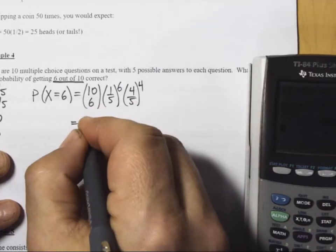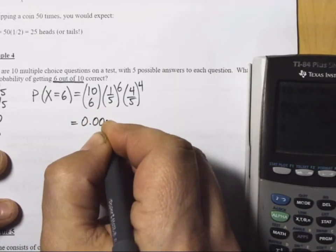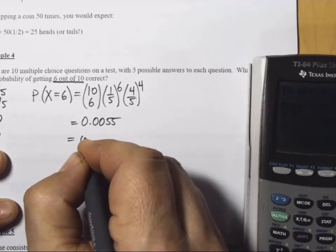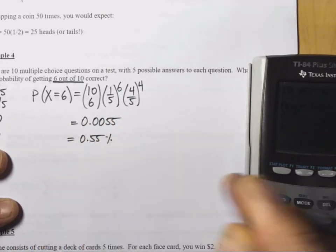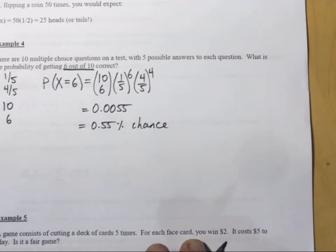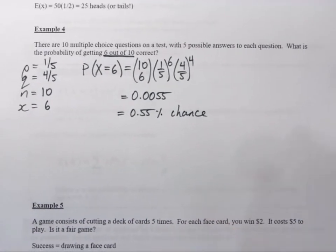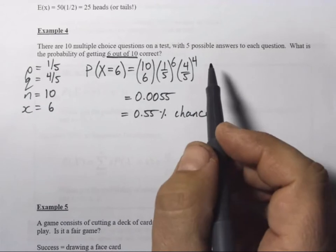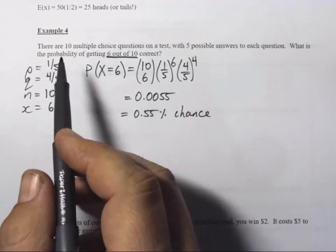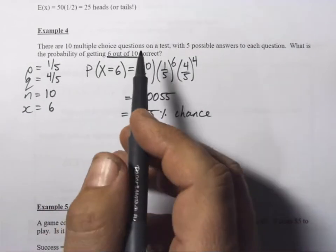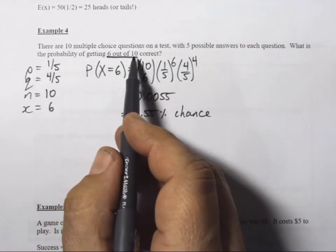And I get 0.0055, or 0.55% chance of that happening. So, a very small chance of that happening. And that makes sense. If you're guessing questions correctly, and you only have a 20% chance of guessing each question correctly, what hope do you have of guessing 6 out of 10 correct?